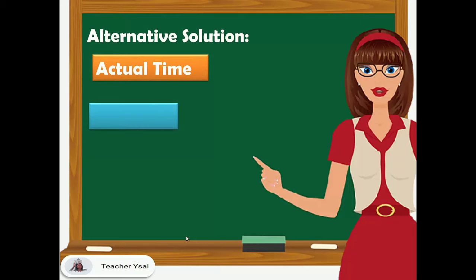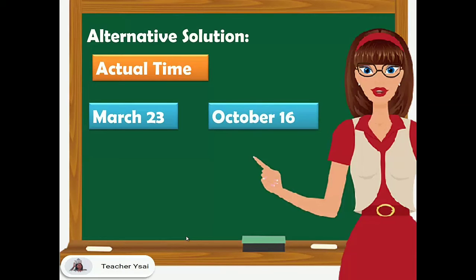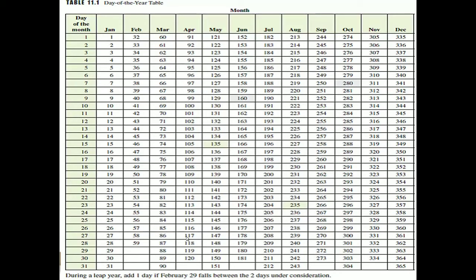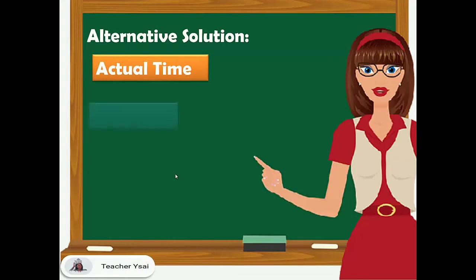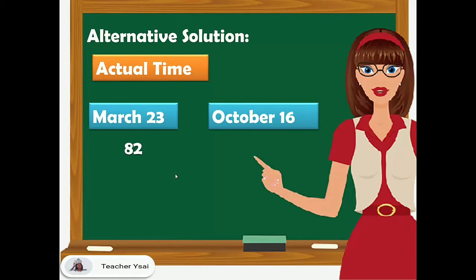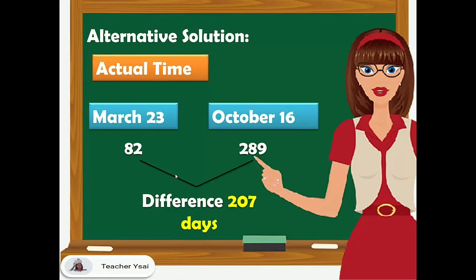We can also solve it this way. To solve for the actual time or the actual number of days, we use a table where each day is numbered from 1 to 365. The origin date, March 23, is the 82nd day of the year, while the end date, October 16, is the 289th day of the year. So we have 82 days from January 1 to March 23, and 289 days from January 1 to October 16. To solve for the actual number of days, we find the difference between 289 and 82, which gives us 207 days — the same result as the first solution.